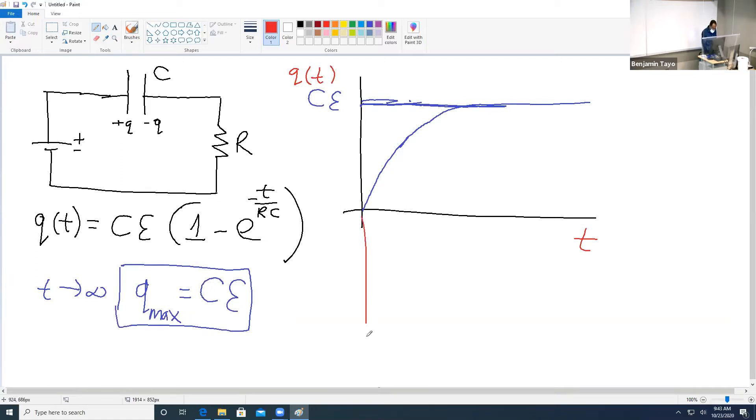Now you can also make a graph here of the current. So how is the current changing with time? I(t). Remember that the current is the derivative of the charge with respect to time.